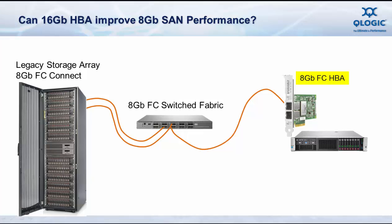Let's take a look at your scenario. You've got the legacy storage and a SAN environment that runs 8GB Fibre Channel line rate. So it makes sense to install 8GB Fibre Channel adapters like the HP 82Q from QLogic in the new HP ProLiant Gen9 servers that are being deployed.